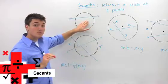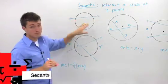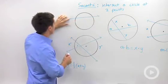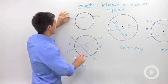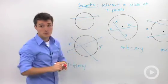Secants are lines that intercept a circle in two places. Notice that I could erase one of these arrows creating a ray and this would also be considered a secant because it starts on the outside and it passes through the circle.